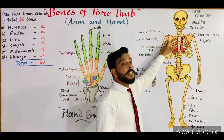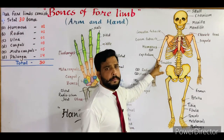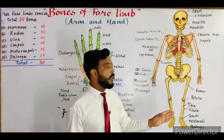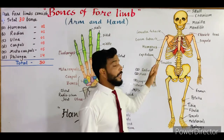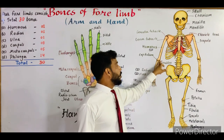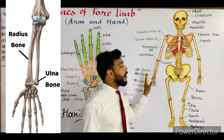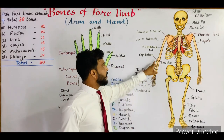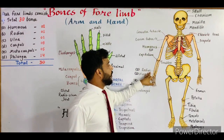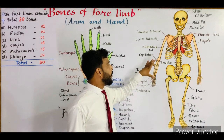This forms our shoulder joint. The distal part of the humerus bone consists of two outgrowths: the outer one is the capitulum and the inner one is the trochlea. The capitulum is attached to the radius bone and the trochlea is attached to the ulna bone. Both the capitulum and trochlea form our elbow joint. So the capitulum attaches with the radius while the trochlea attaches with the ulna.